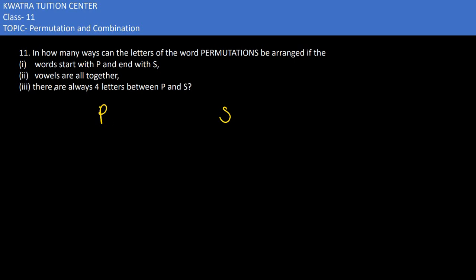We have 10 letters in this permutation because P is fixed and S is fixed. So how can we find it? For the first case, it will be 10 factorial. And if you take care of which letters are repeated...